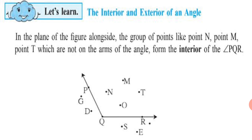Look at the figure now. You can see Angle PQR. In the plane of the figure, the group of points like Point N, Point M, Point T, Point O — which are not on the arms of the angle — form the interior of Angle PQR, and so they are called points in the interior.